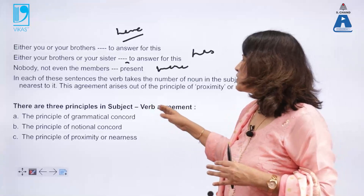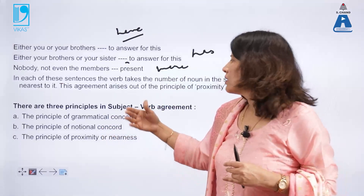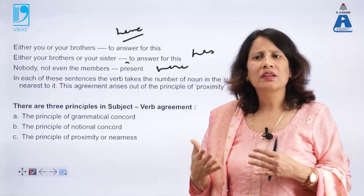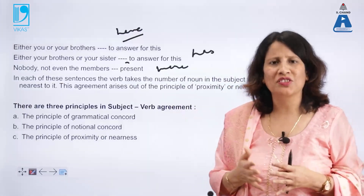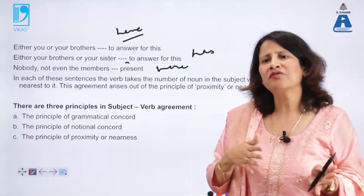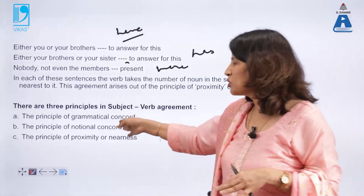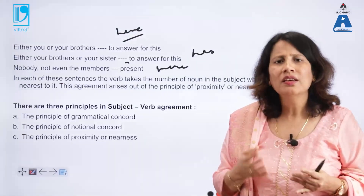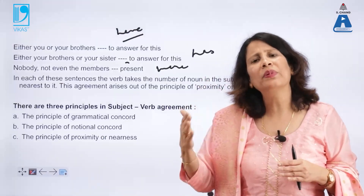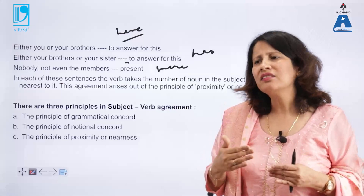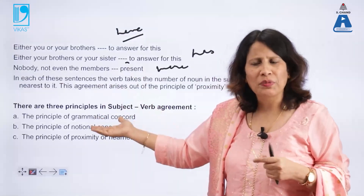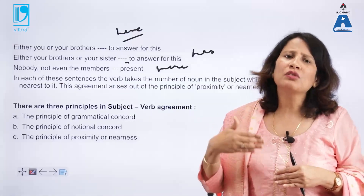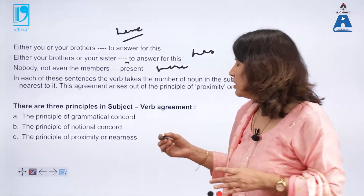So basically there are three principles in subject-verb agreement we have discussed. First, grammatical concord — where the number of the subject and verb match: singular subject followed by singular verb, plural subject followed by plural verb. Second, notional concord — where the number of subject and verb do not match; visibly the subject looks singular but we consider the individuals who form it, so it is followed by a plural verb. Third, the principle of proximity — where the verb takes the number of the subject closest to it to avoid confusion.